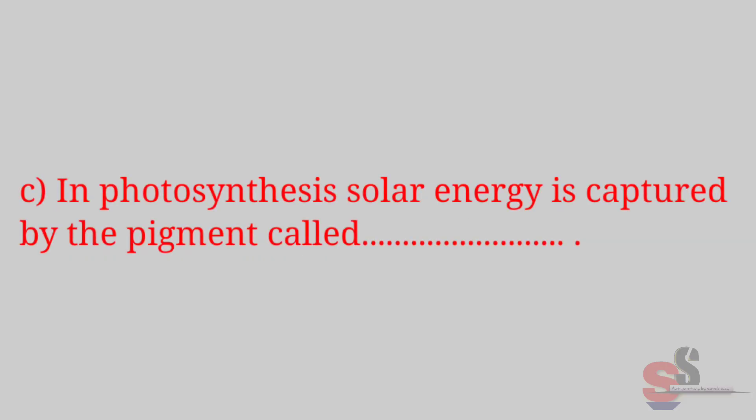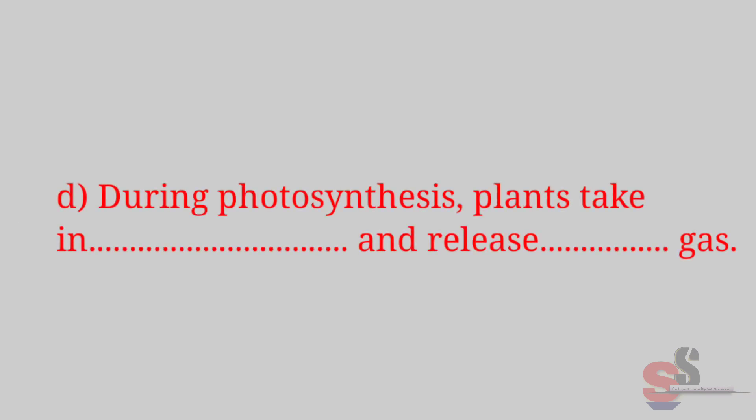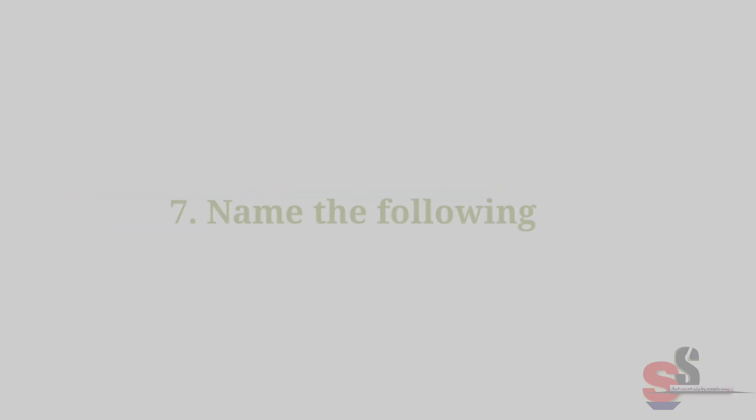(c) In photosynthesis, solar energy is captured by the pigment called [blank]. Right answer is chlorophyll. (d) During photosynthesis, plants take in [blank] and release [blank] gas. Right answer is carbon dioxide, oxygen.